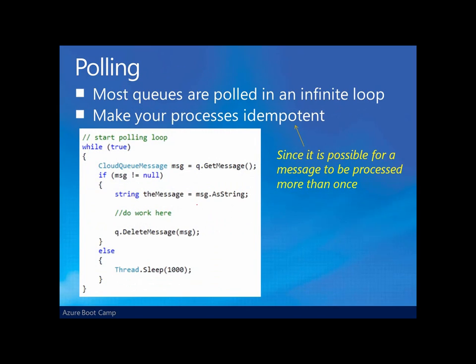Now, one thing we're going to want to do with regard to building Azure applications and working with these queues is to have some sort of process that polls and constantly checks for messages in a queue. There is no publish or subscribe type of mechanism as we might find in other messaging systems in Azure. So it's up to the applications consuming messages to poll or constantly be looking for messages. Typically, consumers of messages are set into some sort of infinite loop.